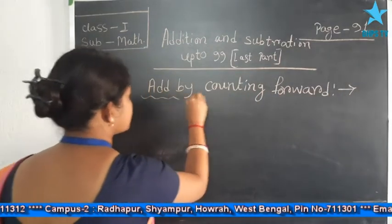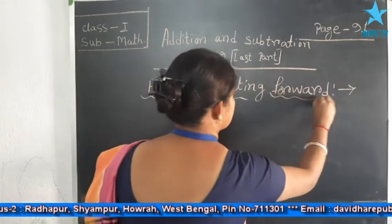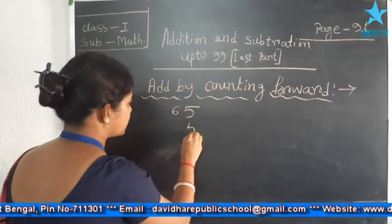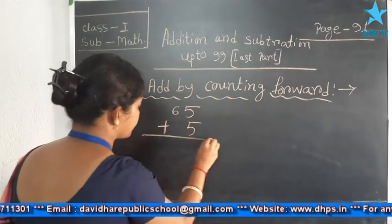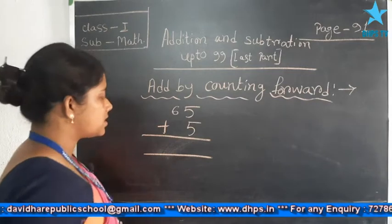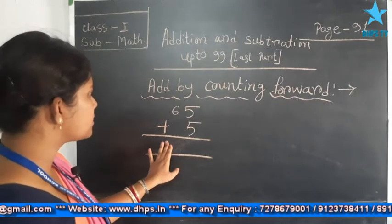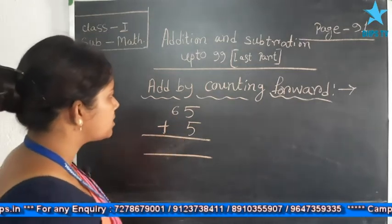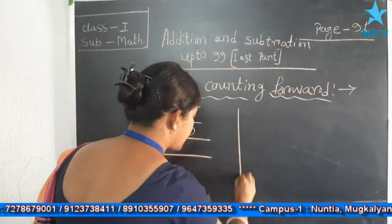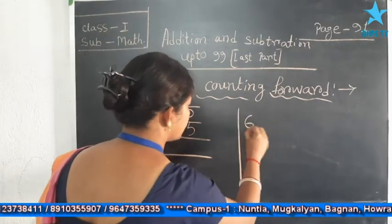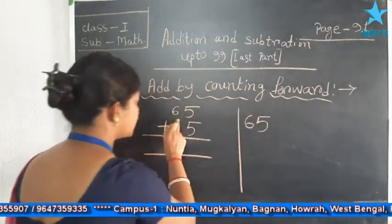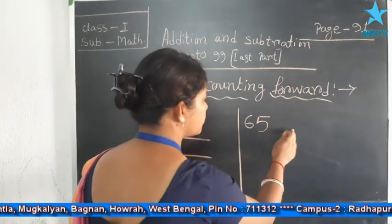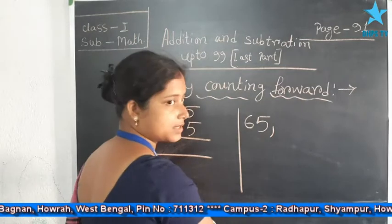For example, I am now solving one problem by counting forward. Suppose you have to calculate the addition 65 plus 5. You can solve it like this: first write the first number, 65. Then you have to go forward from 65.